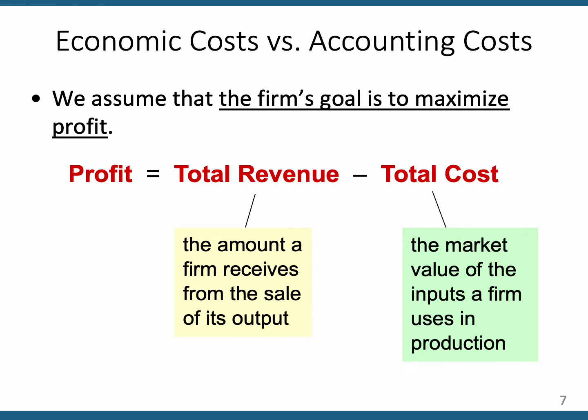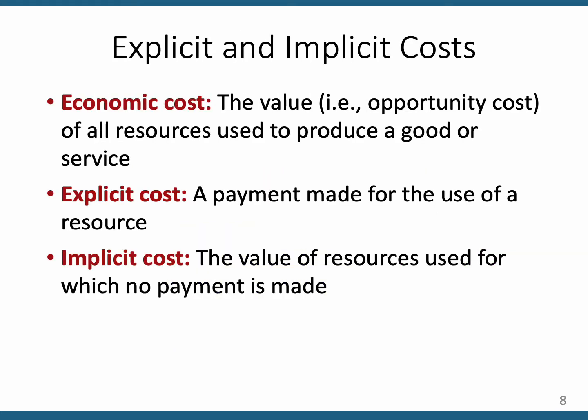Profit equals total revenue minus total cost. We're going to break down the total cost part of this equation further. To an economist, economic costs include explicit costs plus implicit costs. An accountant might only consider explicit costs. Explicit costs or accounting costs are costs that can be tracked in dollars — costs for which a payment has been made and an accountant would record those transactions.